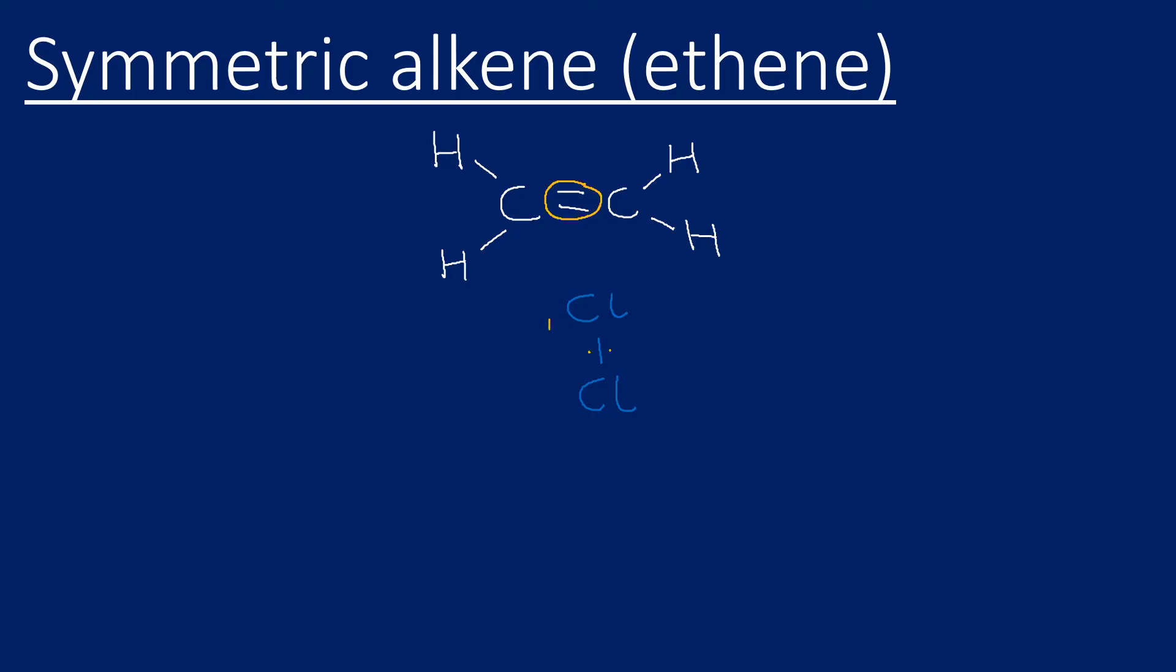But as I've already said, this double bond is an area of high electron density and what it does is it repels the electrons in this bond. So it pushes the electrons this way, so these electrons get pushed down towards this bottom chlorine, and that causes a dipole. We have a slightly negative and slightly positive.